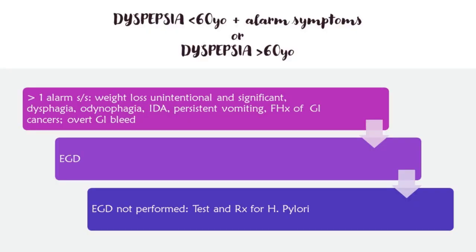For a patient with dyspepsia less than 60 years of age with alarm symptoms, or a patient with dyspepsia older than 60 years of age, alarm symptoms include unintentional and significant weight loss, dysphagia, odynophagia, iron deficiency anemia, persistent vomiting, family history of GI cancers, and overt GI bleed. If the patient is older than 60 years of age, we prefer performing upper endoscopy first rather than jumping straight to test and treat for H. pylori. If upper endoscopy cannot be performed, then test and treat for H. pylori.